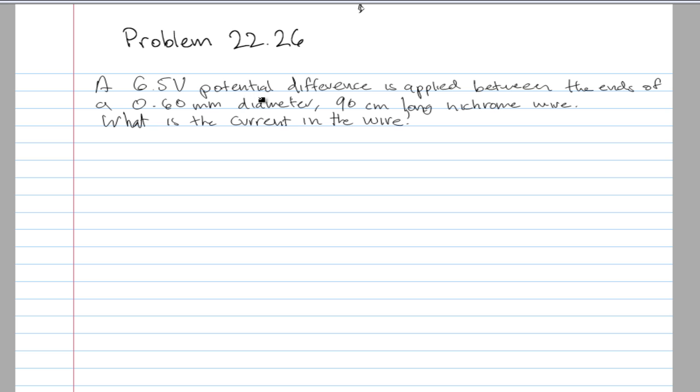A 6.5V potential difference is applied between the ends of a 0.6 millimeter diameter, 90 centimeter long nichrome wire. What is the current in the wire? For this problem we need two formulas: the resistance formula to know how much resistance is in the wire.